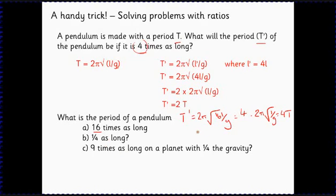If it's a quarter as long, we're going to have 2π times the square root of L over 4g. Take that out, that becomes a half times 2π root L over g, so that's T over 2.